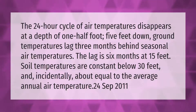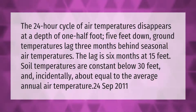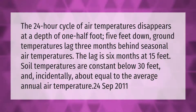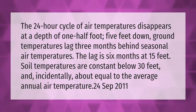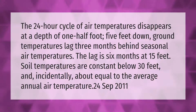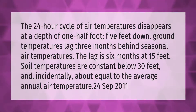The 24-hour cycle of air temperatures disappears at a depth of one-half foot. Five feet down, ground temperatures lag three months behind seasonal air temperatures. The lag is six months at 15 feet. Soil temperatures are constant below 30 feet and are about equal to the average annual air temperature.